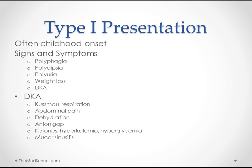Type 1 we classically think of as childhood diabetes. It can happen at any time during life and can be initiated by different factors, but most often you'll see it in children. These kids, if we catch them early, are going to present with polyphagia, polydipsia, and polyuria. They're going to have some weight loss, and some of them will come in with DKA, which we hope to avoid.